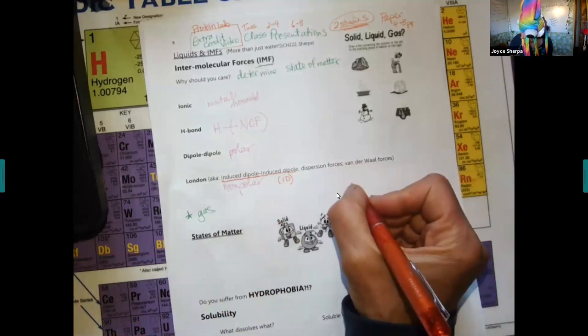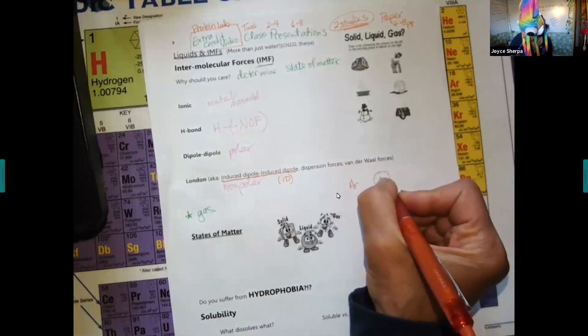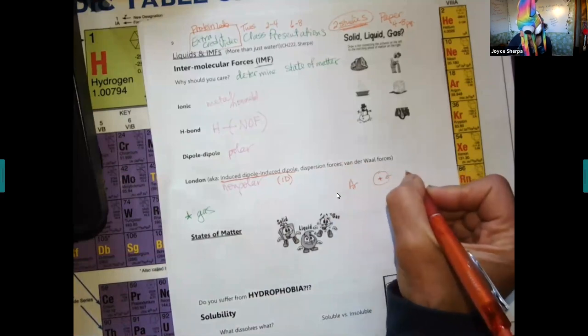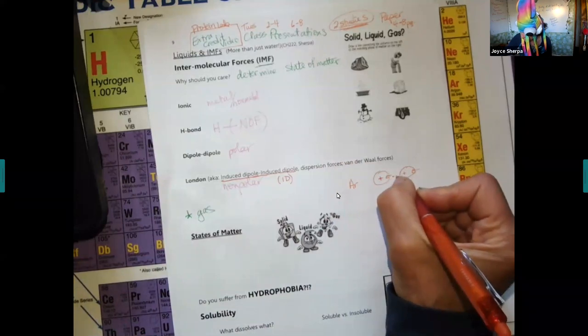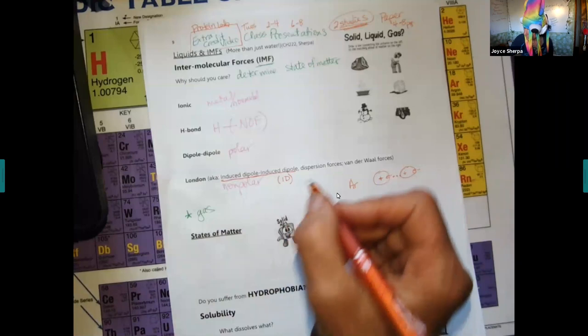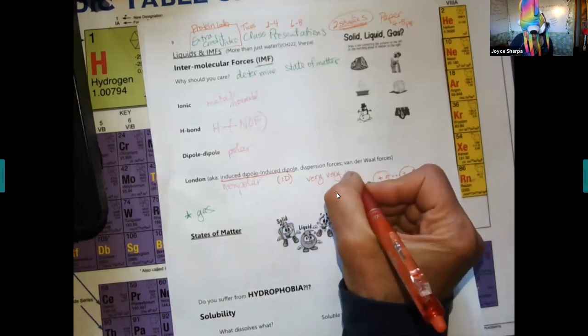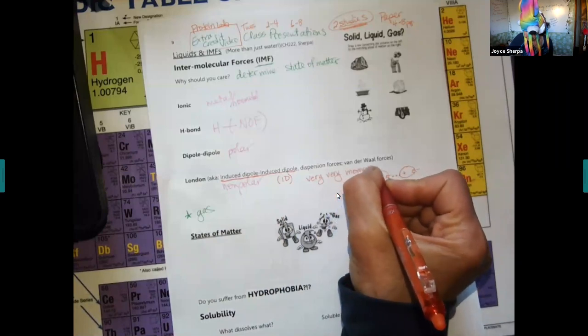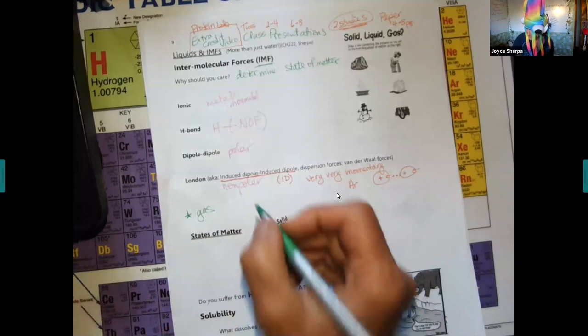They can be called dispersion forces or Van der Waals. They're momentary. If you had something like argon, you have two atoms. In the center you have a positive. If the electrons for a moment warp the other one and have an attraction to the nucleus of the other atom, it's very momentary. It's really an illusion.